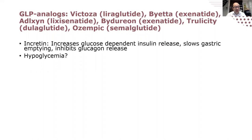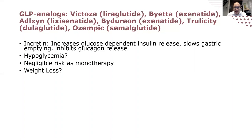GLP-1 analogues are a large and growing class. Think of them as stronger versions of DPP-4s — when I have a patient on a DPP-4 and start them on a GLP-1, I'll phase out the DPP-4. They work as artificial incretins, slowing gastric emptying, increasing insulin secretion from the pancreas, suppressing glucagon, and inducing satiety in the brain. The risk of hypoglycemia is negligible, and you get quite a bit of weight loss — generally more than with SGLT2s. There's also substantial evidence that some GLP-1 analogs reduce major adverse cardiovascular events.